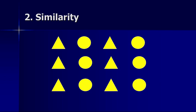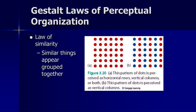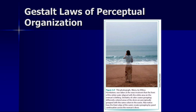With similarity, we group things based on how similar they are. So while there are twelve individual objects here, we tend to see four columns of two different kinds of objects rather than three rows, simply because they're similar to one another. If you look at this pattern of dots, we see rows and vertical columns, whereas another arrangement looks clearly like vertical columns and not rows. Another example of similarity has to do with color — this woman almost looks transparent because her dress matches the color of the foam in the sea.